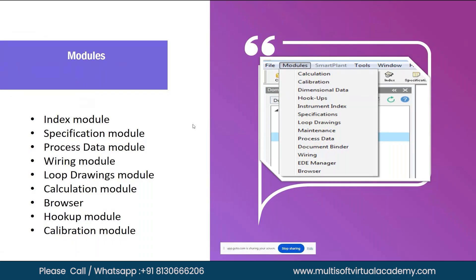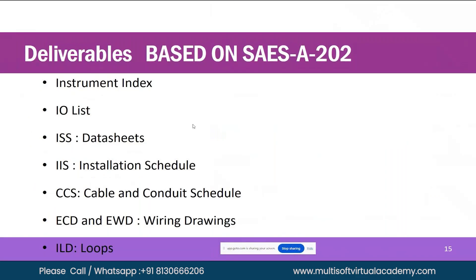The models available in SPI are: the Index model to prepare instrument index, the Specification model for specifications, the Process Data model for process datasheets, the Wiring model for wiring diagrams, the Loop Drawing model for loop drawings, and the Calculation model for calculations. If asked in an interview which models you are familiar with, remember that models are simply your deliverables.